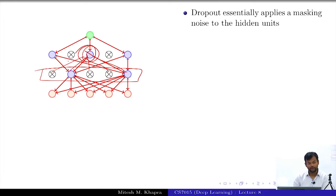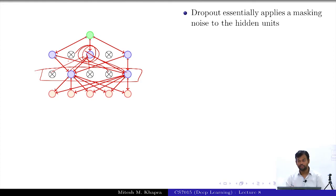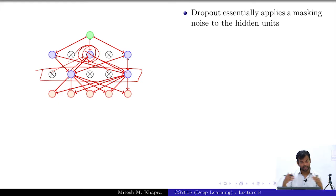Consider a layer of neurons all collectively responsible for one output. A neuron could become lazy and say: I will not contribute; the other neurons will take care of it and adjust their weights. But with dropout, neurons cannot rely on their neighbors because they do not know when their neighbors will be dropped out — suddenly a neighbor disappears and the lazy neuron must contribute.